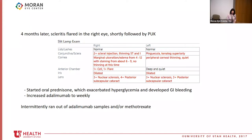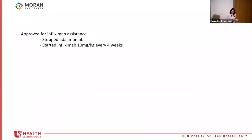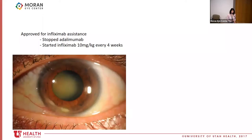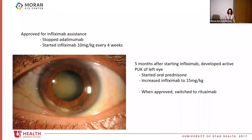She keeps running out of Humira samples, so she is moved to apply for infliximab (Remicade) assistance — an infusion given at the hospital every four weeks — hoping this is more reliable. She stops Humira and starts infliximab at 10 mg/kg every four weeks. Five months later, however, her left eye develops PUK, indicating she is inadequately controlled. Her infliximab dose is increased to 15 mg/kg while she awaits approval for rituximab assistance. When approved, she is switched to rituximab given in two doses, then six months later for the next dose, and she does well.